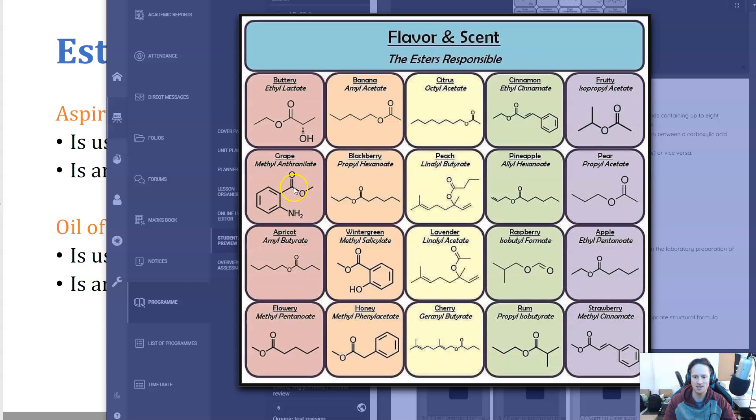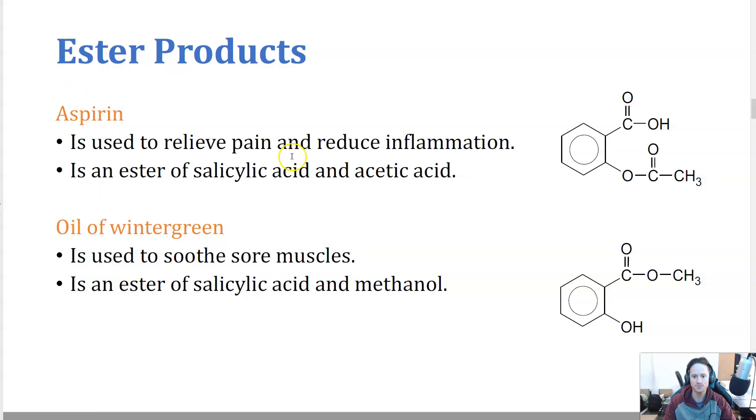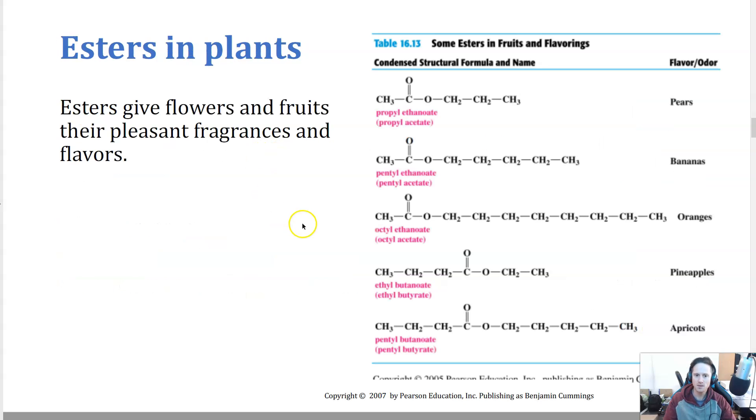So there's lots of different examples. These are all esters. You can see the ester functional group in all of them. They're responsible for fruity smells, which is pretty cool. So that can be produced synthetically. We can add like banana smells to a banana candy or something like that. So esters give flowers and fruits their pleasant fragrances and flavors. There's a few other examples here. Pears, bananas, oranges, pineapples, and apricots.